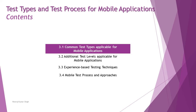The four topics are: 3.1 Common test types applicable for mobile applications, 3.2 Additional test levels applicable for mobile applications, 3.3 Experience-based testing techniques which can be applied for mobile applications, and 3.4 Mobile test process and approaches unique to mobile applications. In this tutorial, we are getting started with the first segment, 3.1 — Installability Testing.